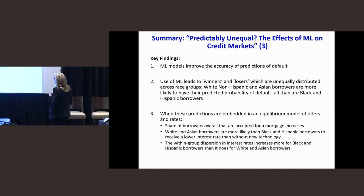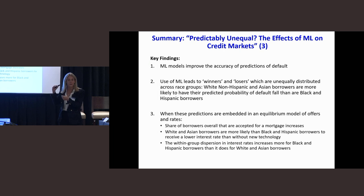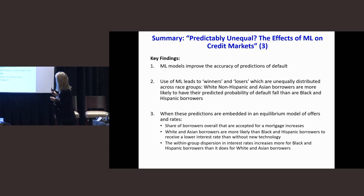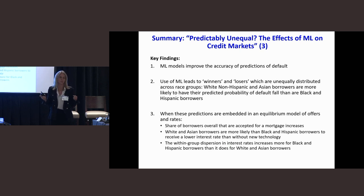The findings: machine learning models improve the accuracy of predictions, but they lead to winners and losers. Being a winner means you're predicted to have a lower probability of default than before — you're a better risk. Losers are the opposite. Black and Hispanic borrowers are the least likely to be winners from the new technology. Running this through the equilibrium model, they find overall more people are offered mortgages, and even more so among black borrowers, but white and Asian borrowers are more likely to receive lower interest rates, and both within-group and cross-group dispersion of interest rates increases.